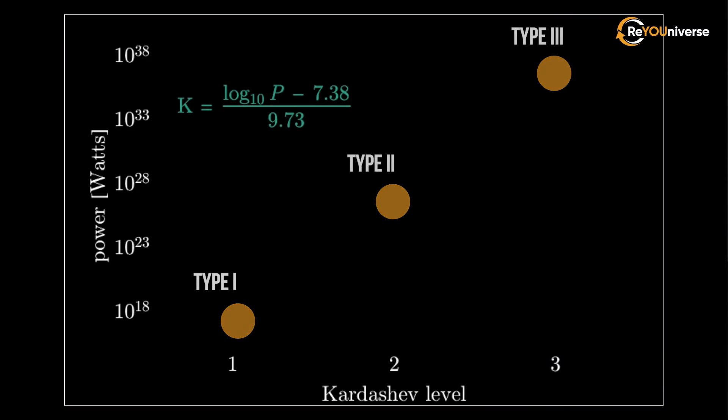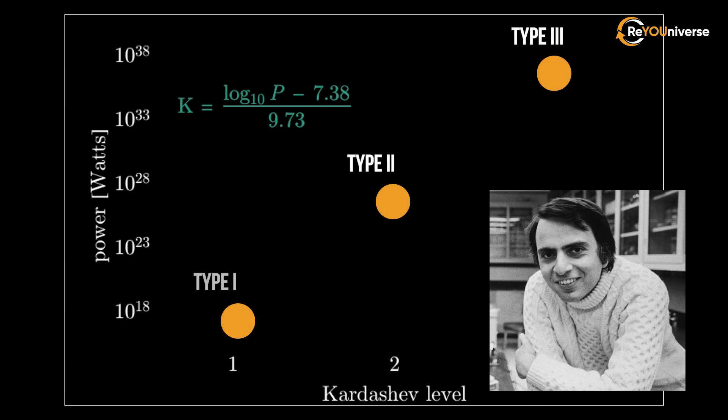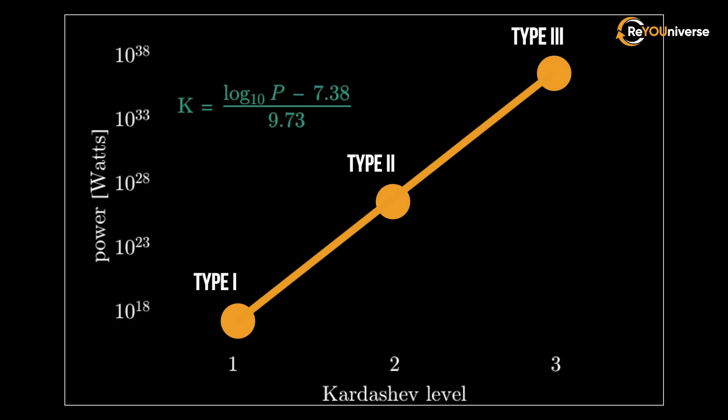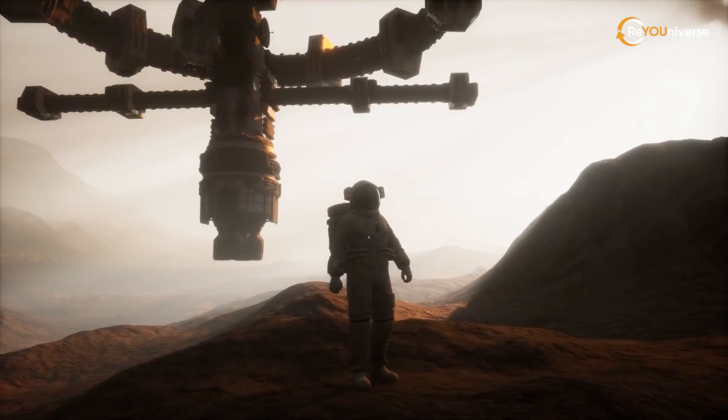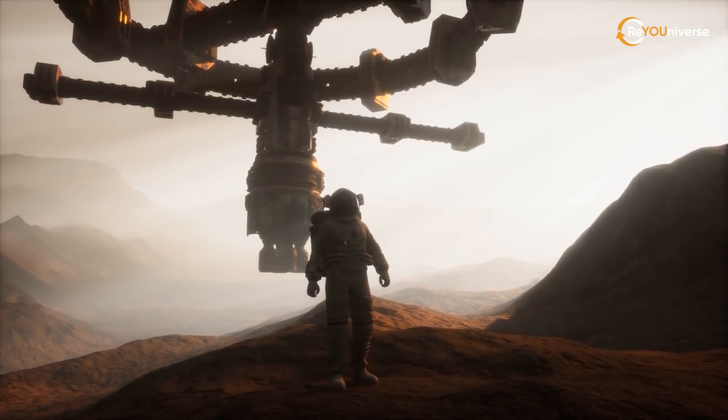The original version of the Kardashev Scale didn't cover intermediate values. However, Carl Sagan proposed to expand the scale's applicability using interpolation and extrapolation, to change it from rank scale to an absolute one. So, let's begin our journey.